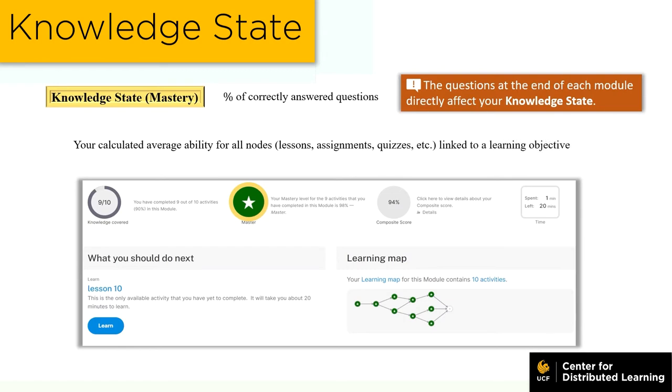It is important to note that this system uses your average ability across all nodes associated with a certain learning objective to calculate your knowledge state. Thus, improving your score on one lesson node may have a varying impact on your knowledge state and thus composite score.